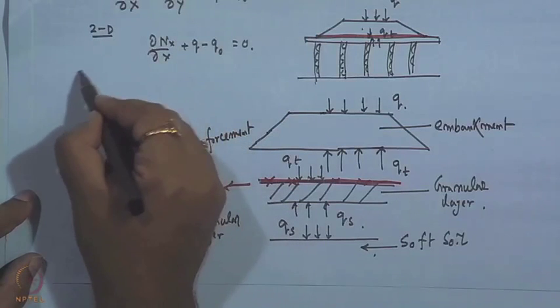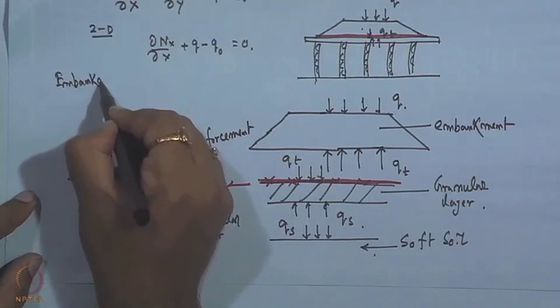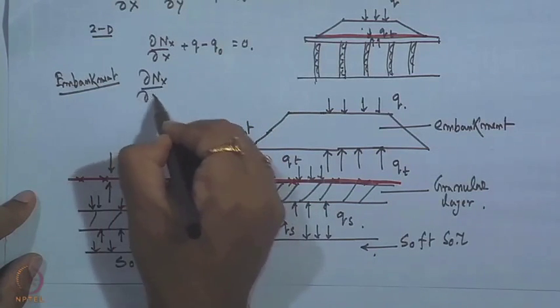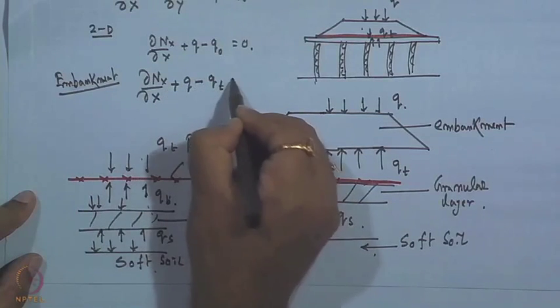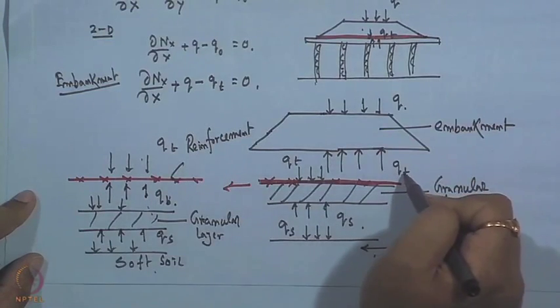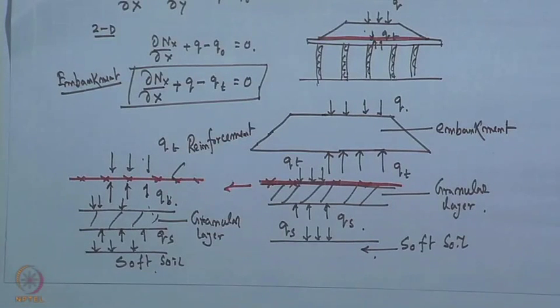The expression for the embankment layer becomes: ∂N_x/∂x + q − q_t = 0. Today I discussed how these things are modeled using soil-foundation interaction components and derived the general expression for the embankment. In the next class, I will express this in terms of deflection, discuss how to change properties or stiffness for Method 1, and determine the width for Method 2.